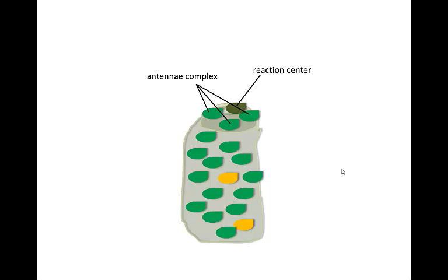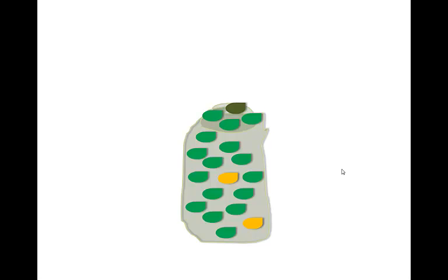The antenna complex acts like an antenna because it collects energy and funnels it towards the reaction center. Let's look at how light energy is captured by a photosystem. Each pigment molecule has one or more electrons that can absorb photons of visible light. When sunlight hits a photosystem, some of the photons have exactly the right amount of energy to be absorbed by the pigment molecules.